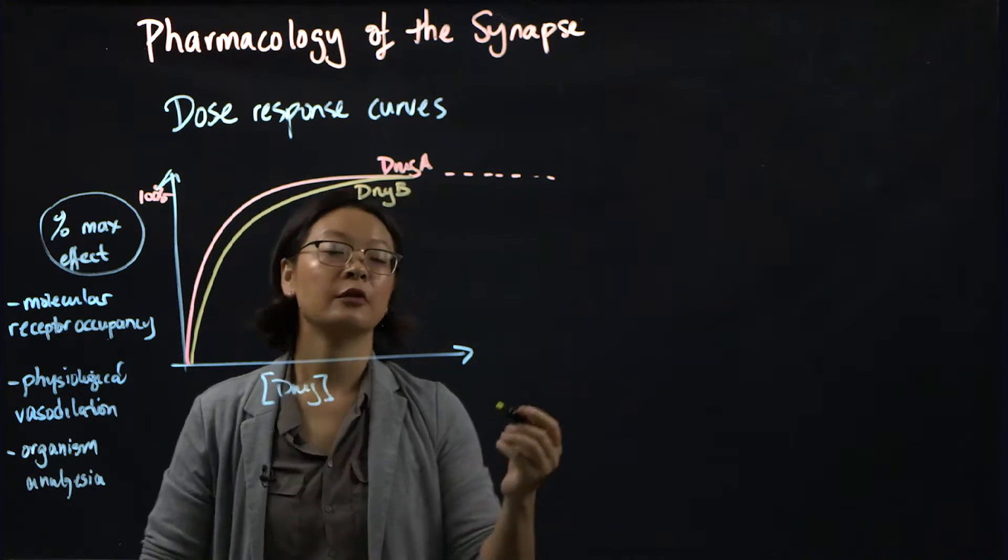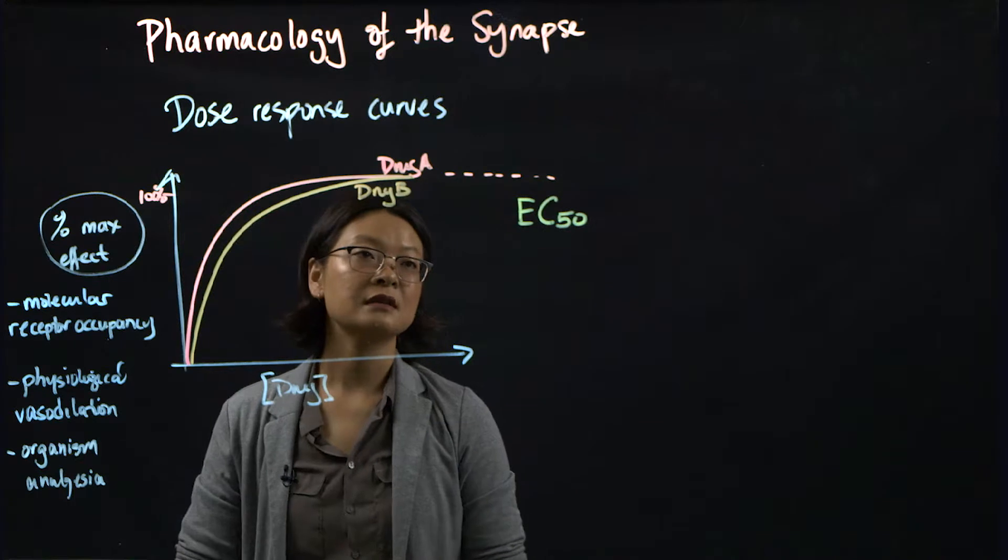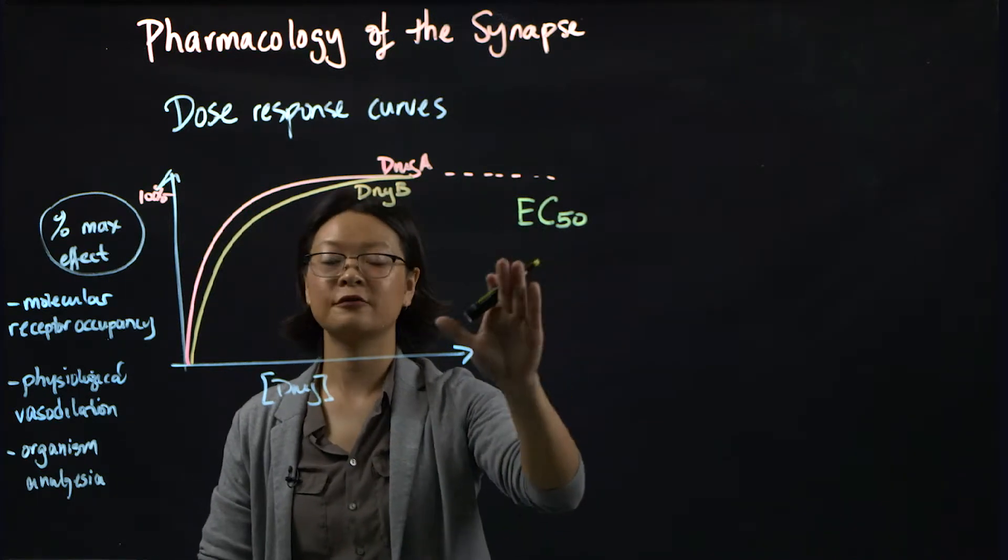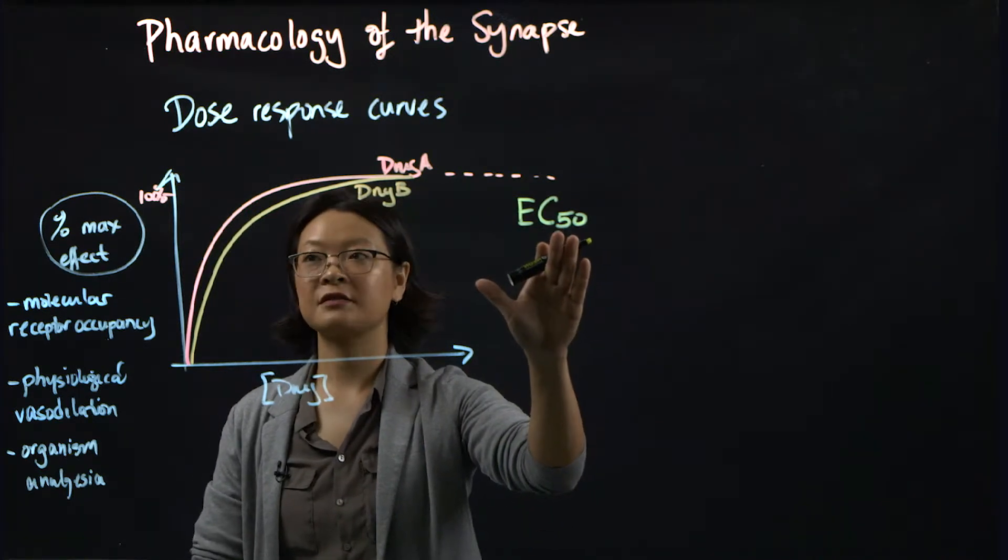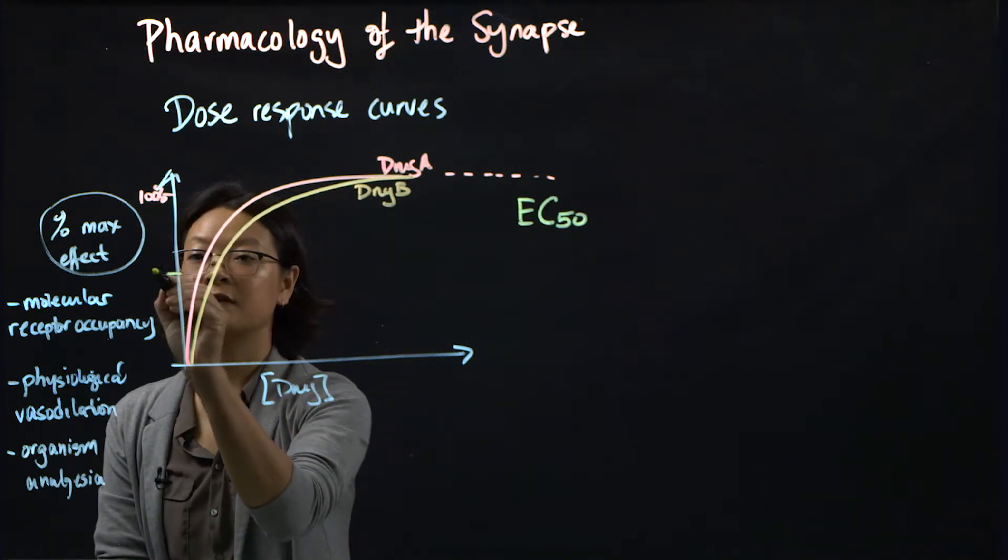And the first thing that I'm going to introduce is the EC50. So this is the effective concentration of drug where it produces 50 percent max effect. So let's just estimate 50 percent here.